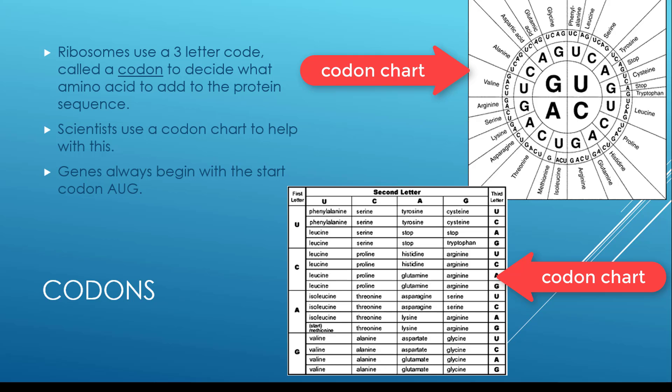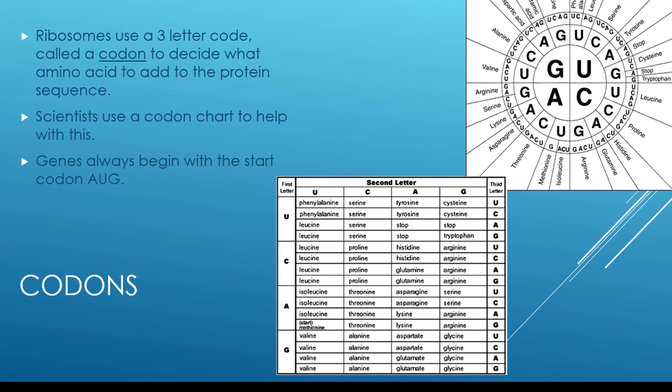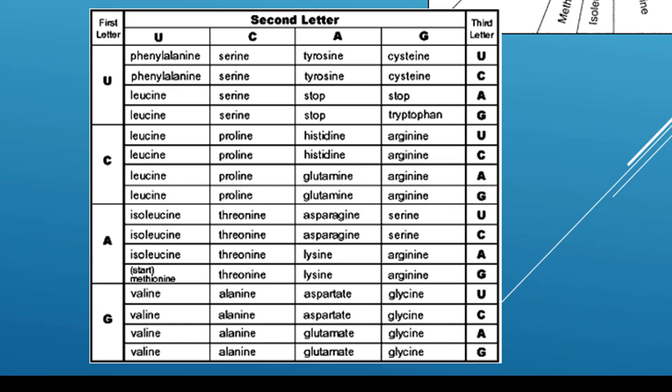There are two different codon charts here. Genes always begin with the start codon, A-U-G. On the square chart, you find the first letter column (A), then find the second letter (U) and line them up to show a square with four possibilities. Then find the third letter (G), and where all three letters line up, that's your amino acid. That's how you use the square chart.